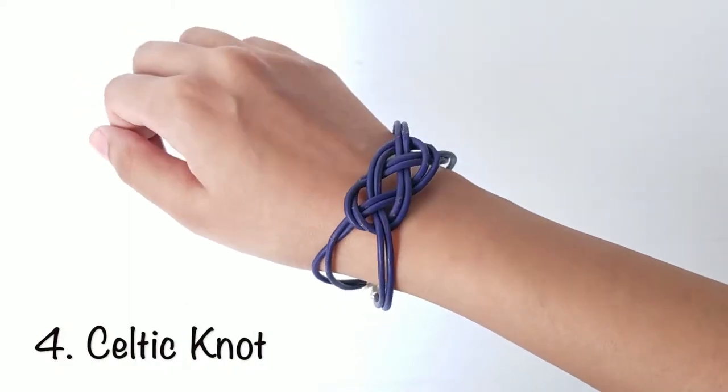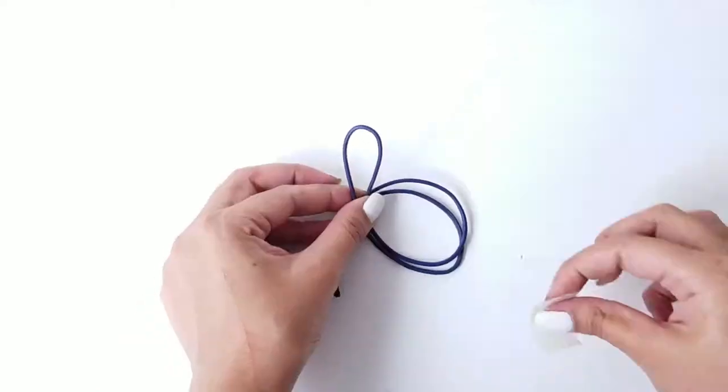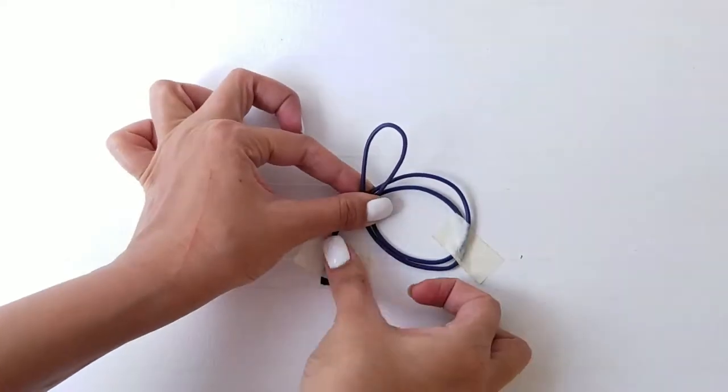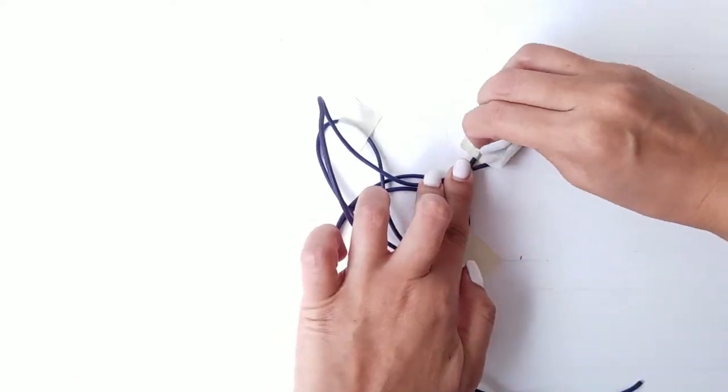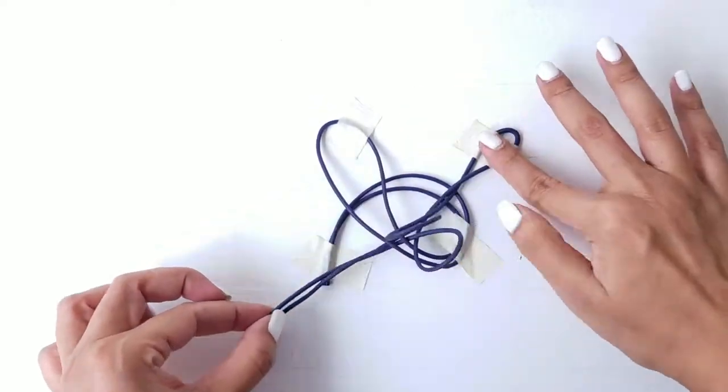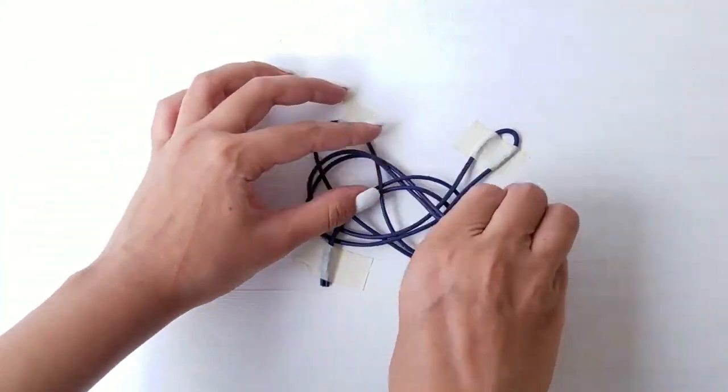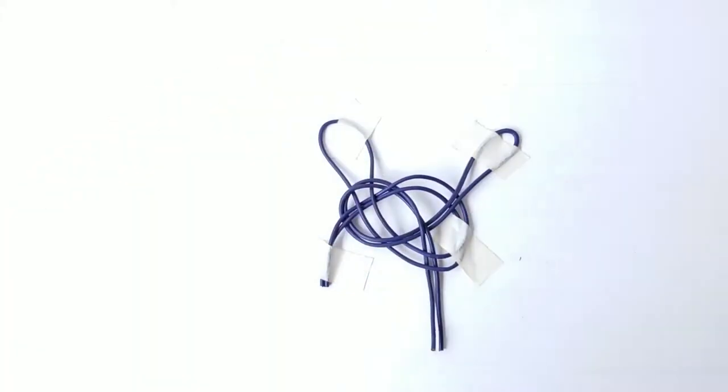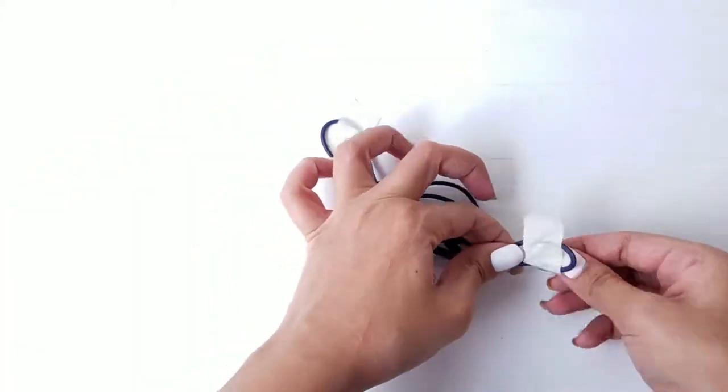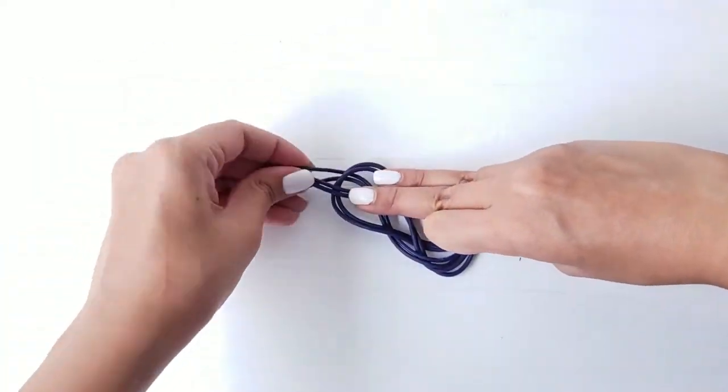The easiest one of the lot is the celtic knot bracelet. Take two pieces of string, fold it in half and tape it to a flat surface as shown here. Once it looks like this, remove all the tape and pull all four strands away from each other to secure the knot.